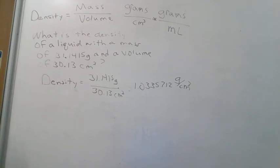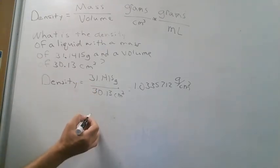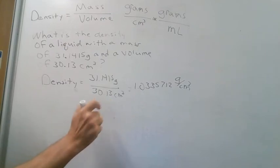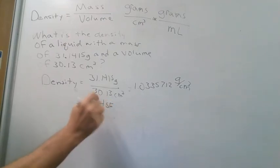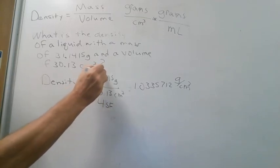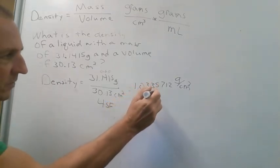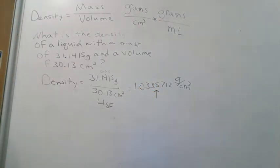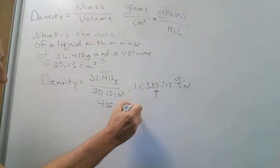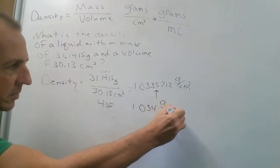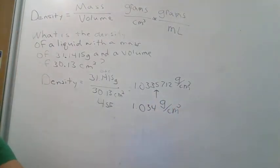Our job's not quite done because we need to address the significant figure issue. This is a multiplication and division problem, so we limit our answer to whichever value has the least number of significant figures. The volume 30.13 has a captive zero, so all digits are significant — four significant figures. The mass 31.1415 has all non-zero digits — six significant figures. So we round to four significant figures. Counting to the fifth significant figure, it's a five, so we look at the preceding digit — it's odd, so we add one. Our final answer is 1.034 grams per cubic centimeter.